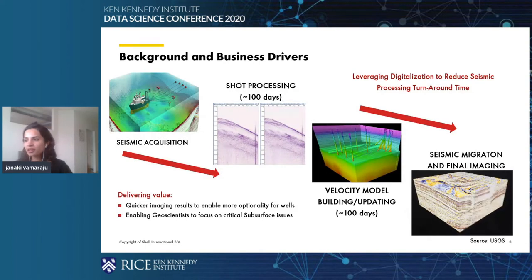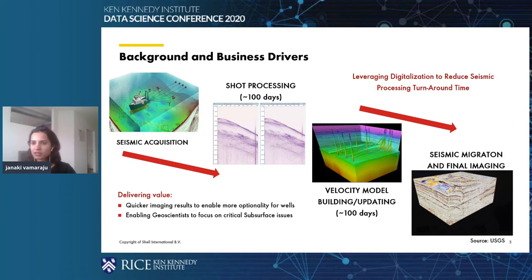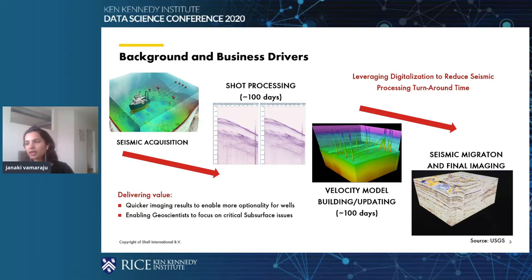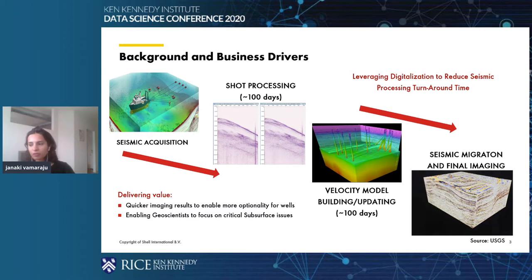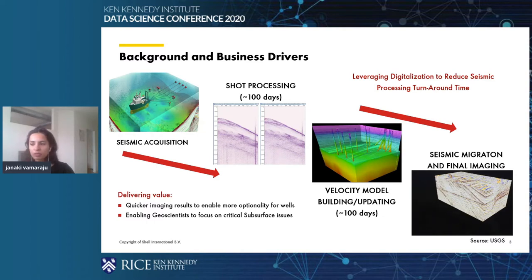In the energy industry, after seismic data is acquired, a series of seismic processing steps are applied, such as shot processing, velocity model building, and seismic migration or imaging. These are undertaken to create an accurate picture of the subsurface. Velocity modelling and updates provide the most value add to the entire processing workflow. If you have an accurate velocity model, you can drill successful wells. Seismic imaging and velocity model building workflows are therefore widely used for subsurface structural interpretations and rock property inversions.